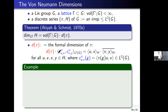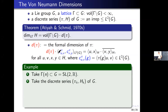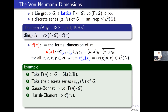Here is a concrete example to show how to compute von Neumann dimension. We take the principal congruence subgroup gamma_n of G = SL2R and the discrete series pi_k. By the Gauss-Bonnet theorem we can get the volume of the quotient space, and by results of Harish-Chandra we can know the formal dimension of this discrete series. Applying the Atiyah-Schmidt theorem, we can show that the von Neumann dimension of gamma_n for the discrete series H_k is given by an explicit formula.